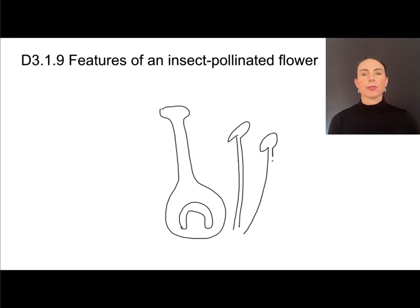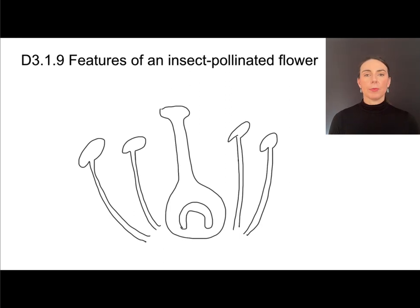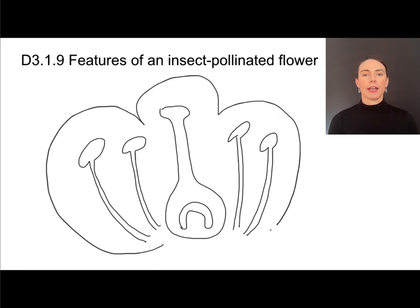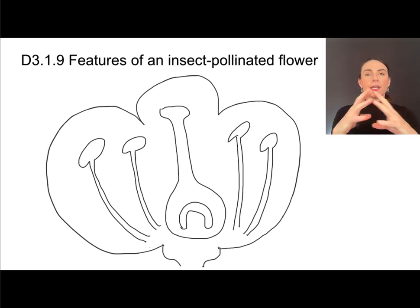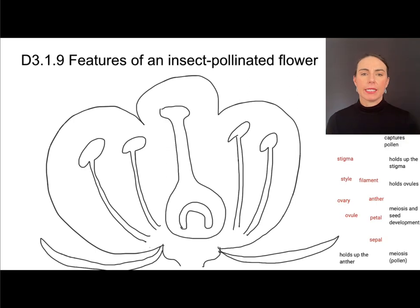Now that I've got the reproductive organs, I need to think about parts that will attract insects. Those are of course the petals — I'll draw three petals. These sit on a receptacle of sorts. Before this flower blooms, it's going to be protected by a structure called the sepal. So let's label these and annotate with the functions. The sepal is the structure that protects the developing flower before it blooms. The large petals are here to attract pollinators and guide them in.